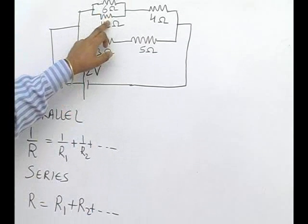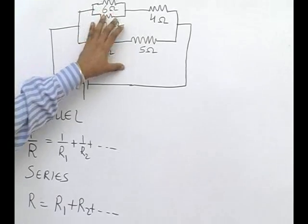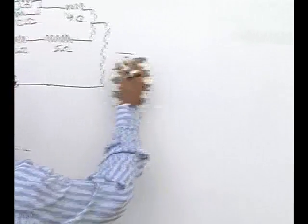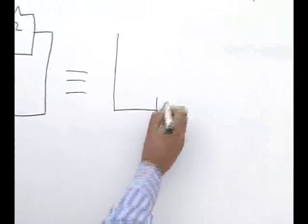Now here, 6 and 12 are in parallel, so this circuit diagram can be converted into a circuit diagram of this type.